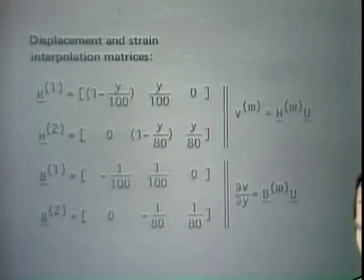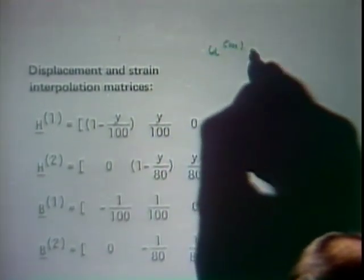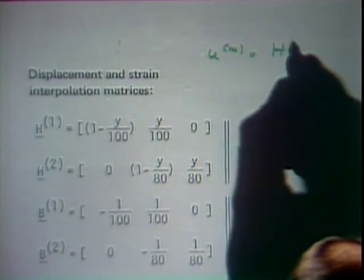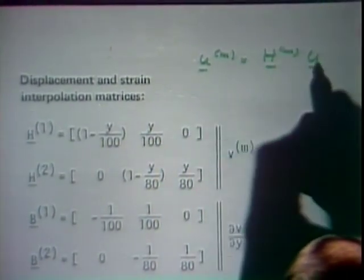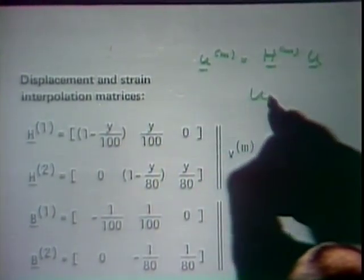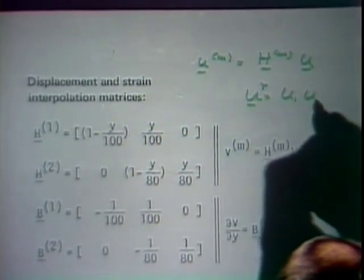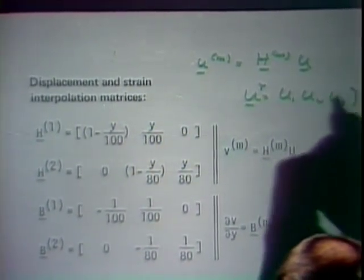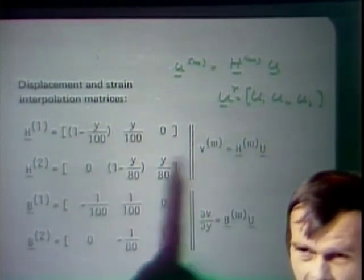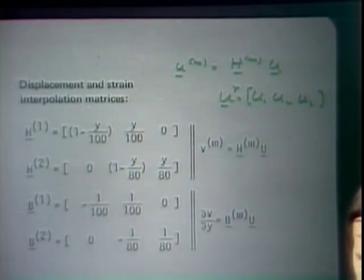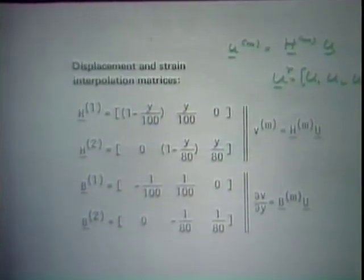Having established the K matrix, the load vector R is simply [0, 0, 100]^T, since we only have a concentrated load of 100 applied at the third degree of freedom.